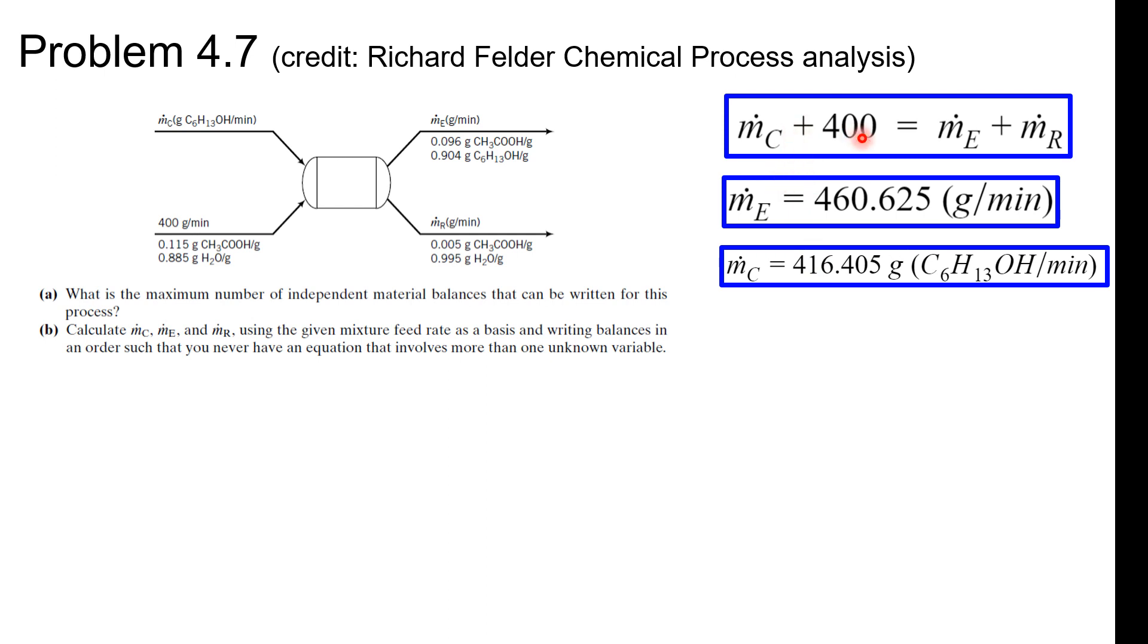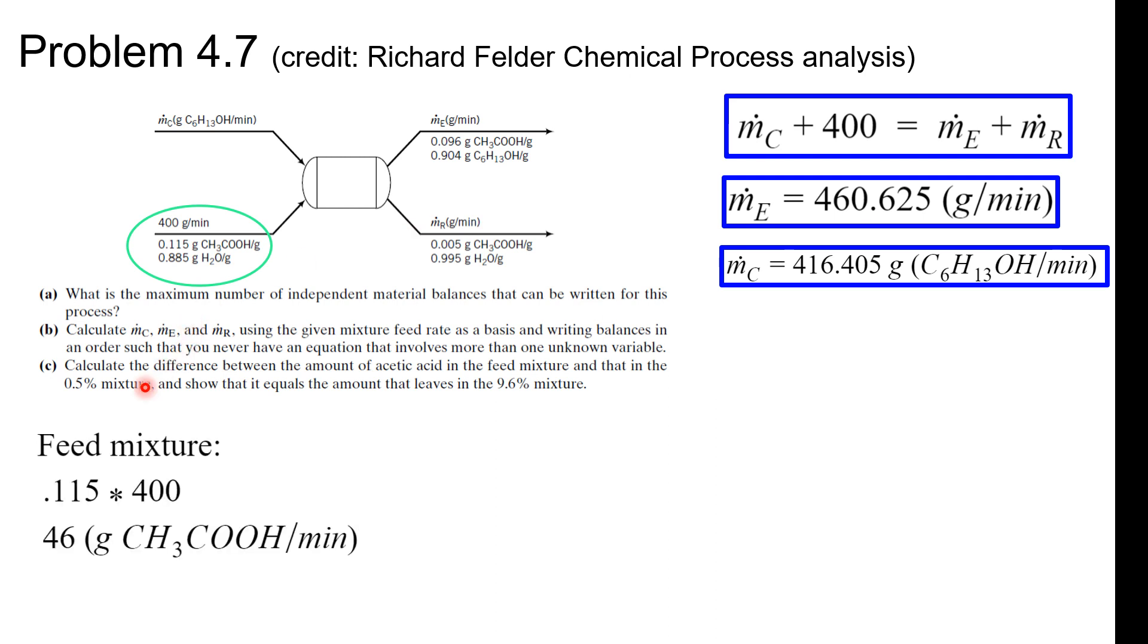Now the last question is calculate the difference between the amount of acetic acid in the feed mixture and that of the 0.5 percent mixture. Okay, so in the feed, acetic acid in the feed mixture we have this guy right here. This is acetic acid. This is acetic acid in the raffinate.